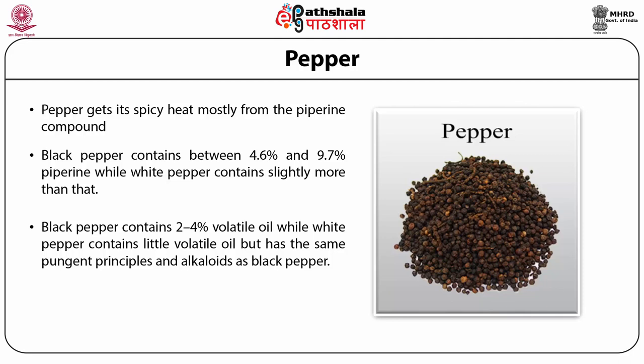Major monoterpenes include alpha-thujene, alpha-pinene, camphene, sabinene, beta-pinene, myrcene, delta-3-carene, limonene, and beta-phellandrene. Sesquiterpenes include beta-caryophyllene as a major component, beta-bisabolene, beta-farnesene, curcumene, humulene, beta-selinene, alpha-selinene, beta-elemene, alpha-cubebene, alpha-copaene, and sesquisabinene.